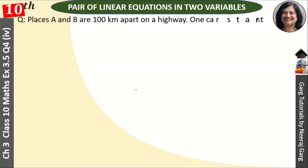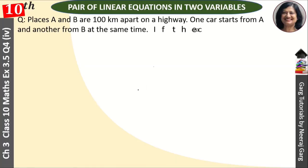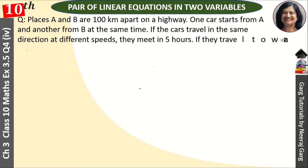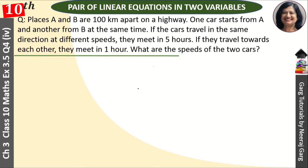Hi, this is Neeraj Garg and you are watching Class 10th Chapter 3, Pair of Linear Equations in Two Variables. Exercise 3.5, Question Number 4: Places A and B are 100 km apart on a highway. One car starts from A and another from B at the same time. If the cars travel in the same direction at different speeds, they meet in five hours. If they travel towards each other, they meet in one hour. What are the speeds of the two cars?